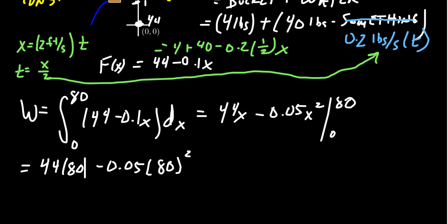Let's see, 44 times 80, that's 3,520. And then 80 squared, that's 6,400. Times that by 0.05, that should give you 320, I believe. And so then this adds up to be 3,200 foot-pounds of work.